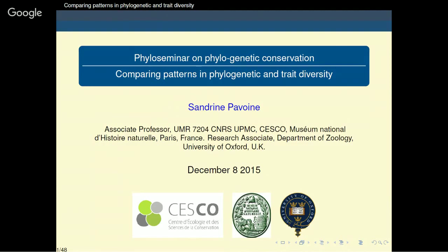I'm grateful to Arne for helping organize this theme session. Today we have a talk from Sandrine Pavouan. Sandrine works in Mathematical Ecology and is particularly interested in measures of species, functional and phylogenetic diversity, and their applications to conservation and community ecology. Sandrine has her Ph.D. in Statistical Ecology from the University of Lyon, where she was supervised by Daniel Chassel. She was then a Marie Curie Fellow working on Mathematical Ecology at Oxford. She is now an Associate Professor at the National Museum of Natural History in Paris, and a Research Associate at the Oxford Department of Zoology.